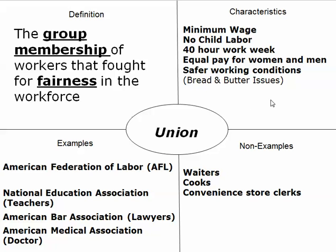These are the bread and butter issues that Samuel Gompers spoke of. Examples of unions today are the NEA or National Education Association for teachers, the American Bar Association for lawyers, and the American Medical Association for doctors.